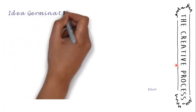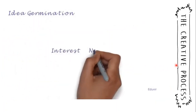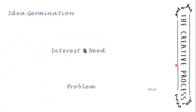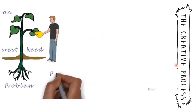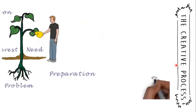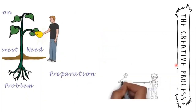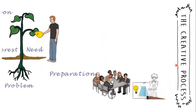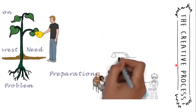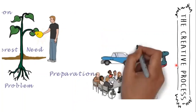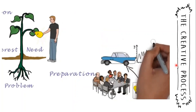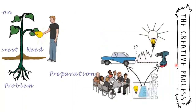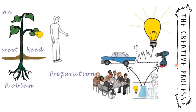Idea Germination: based on the interest, need, or a problem, an idea is germinated and the entrepreneur recognizes a potential opportunity. Preparation: the idea germinated in the above step is evaluated and a solution is identified. If the solution leads to an innovative product or service, market research is performed to identify opportunities to exploit the idea. Once it is concluded that the idea has potential growth opportunity, the entrepreneur will proceed.